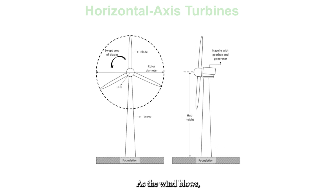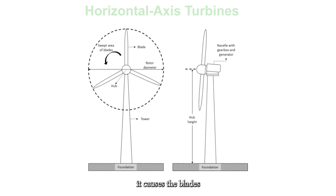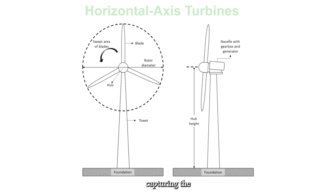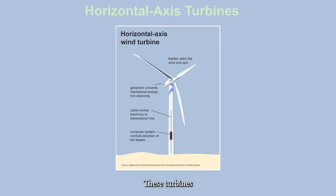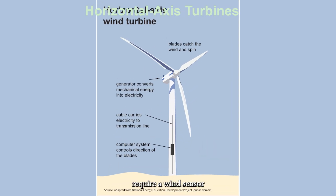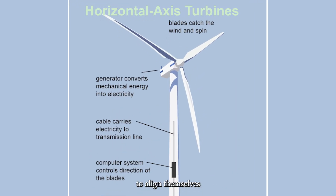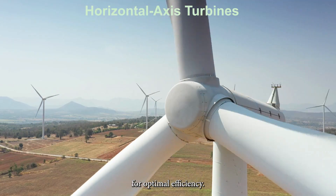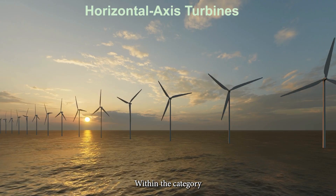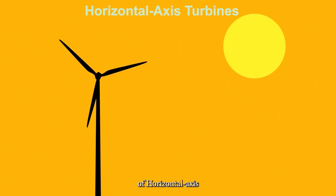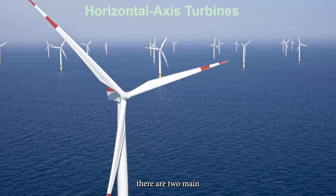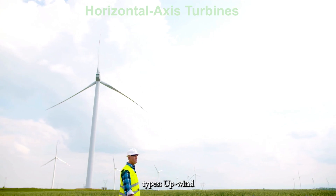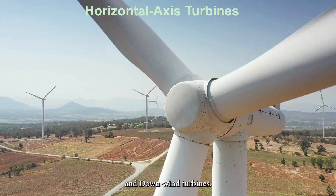As the wind blows, it causes the blades to rotate, capturing the wind's energy. These turbines require a wind sensor and a yawing mechanism to align themselves with the wind direction for optimal efficiency. Within the category of Horizontal Axis Turbines, there are two main types: upwind and downwind turbines.